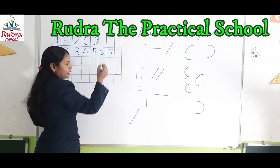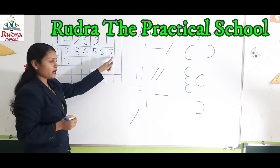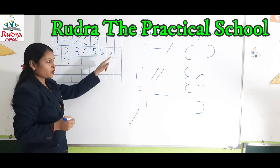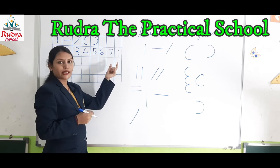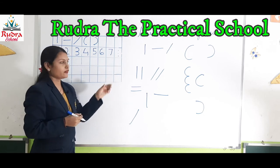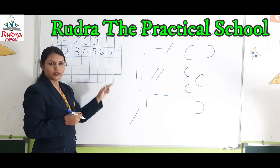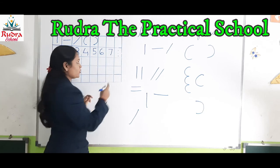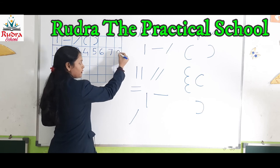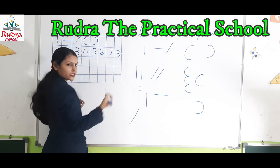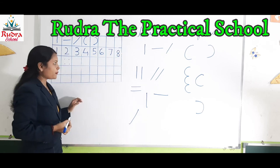Now see how to write number eight with the help of three dots. Start from here and make a curve like this — this is number eight.